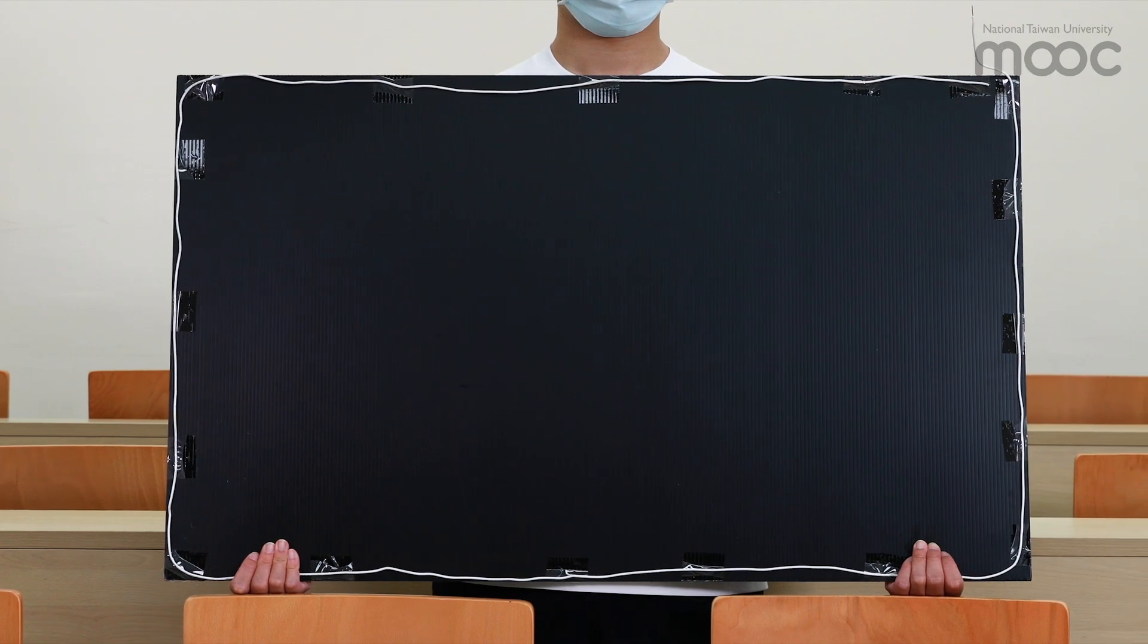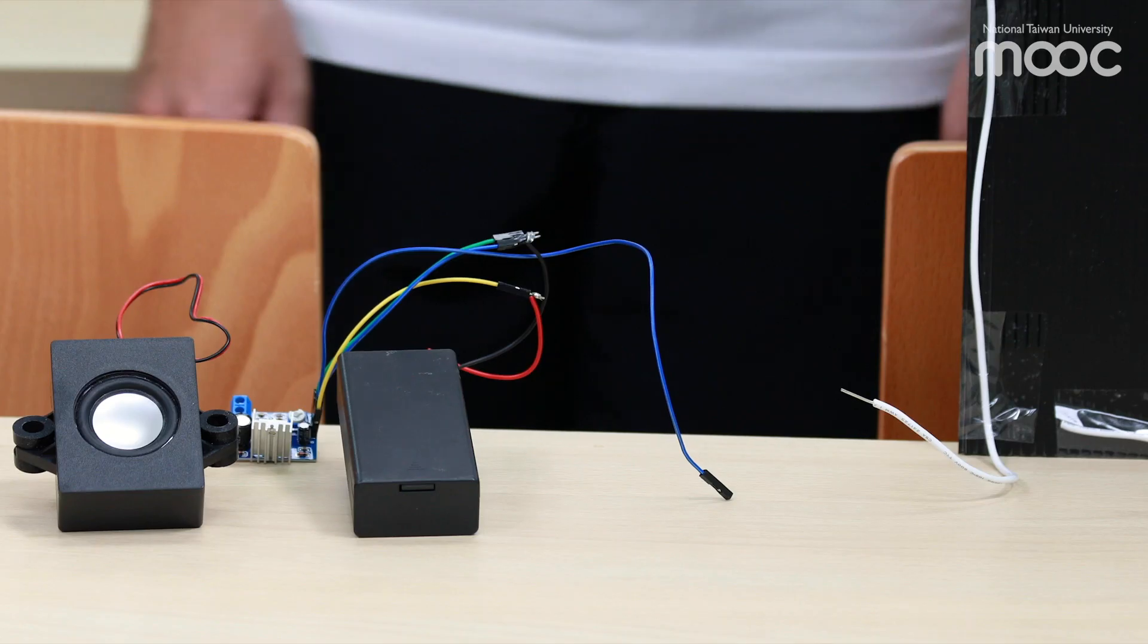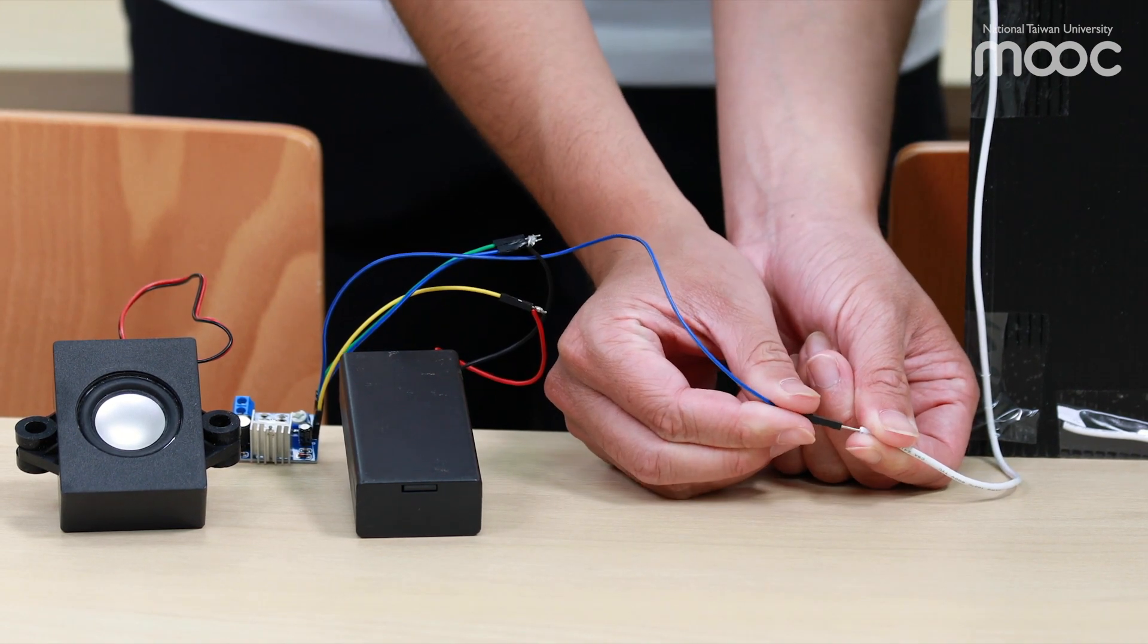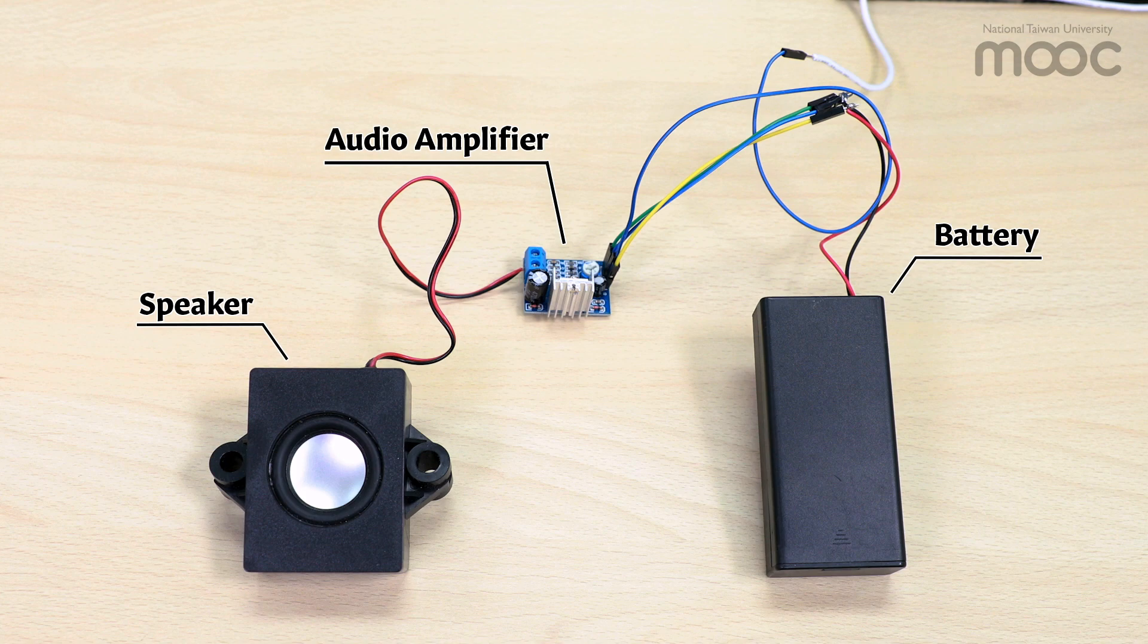Here, we will use the loop to collect the radio signals again. This time, however, the terminal will be linked to an audio amplifier device. The audio amplifier device consists of an audio power amplifier and a speaker.